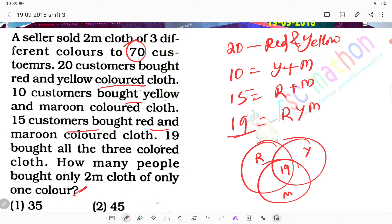Two colors: who bought which? 15 bought red and yellow. 15. And 10 bought yellow and maroon. Yellow and maroon. Not 15, it's 10.